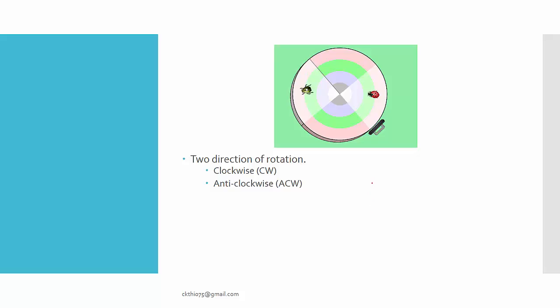The location of the pivot is where it doesn't spin at all, and the rest of it spins. There are two directions of rotation: clockwise, which follows the direction of a clock, and anticlockwise, which opposes the direction of the clock.